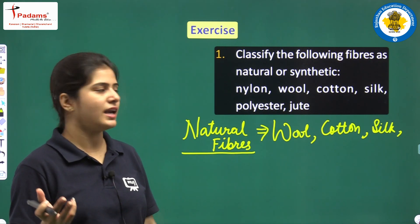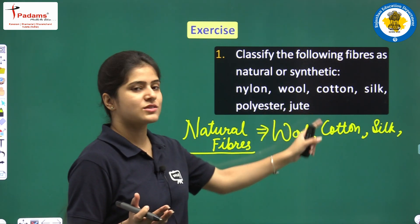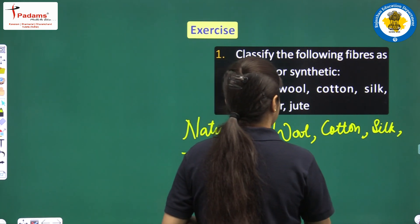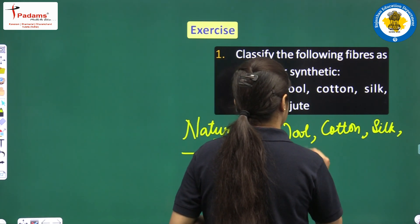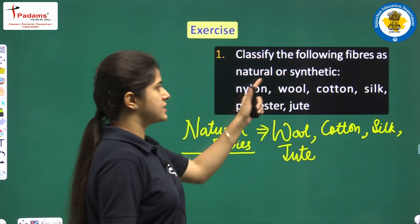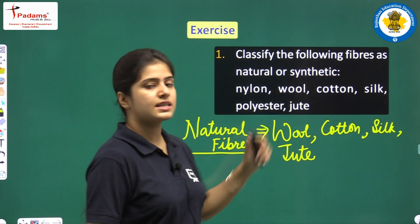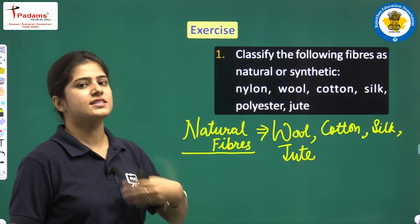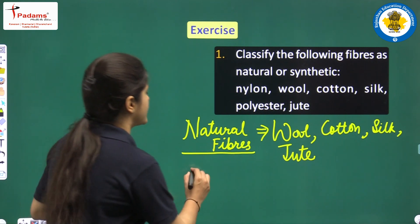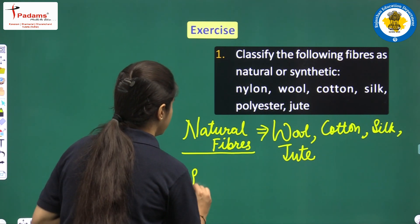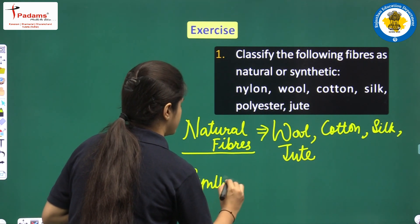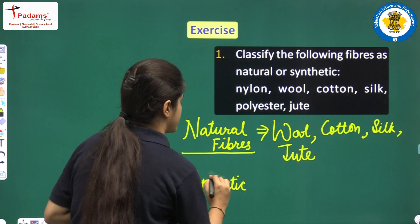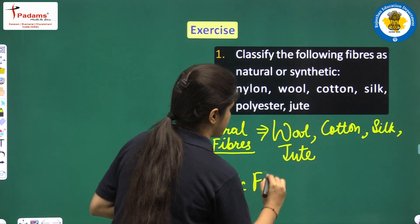Polyester is not a natural fiber. Jute is obtained from the stem of the jute plant, so jute is also a natural fiber. Whatever is left — such as nylon and polyester — are synthetic fibers.